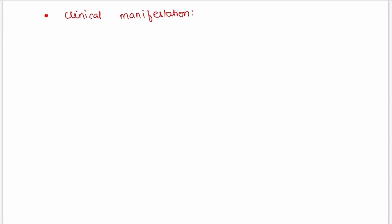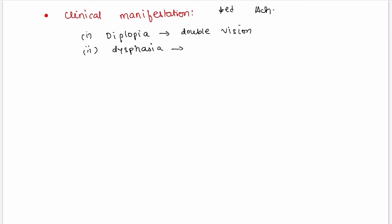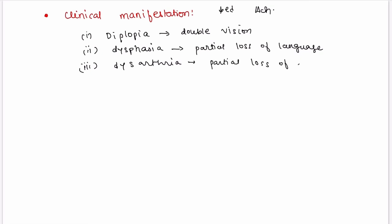Now let's talk about the clinical manifestations of botulism. These manifestations are due to decreased acetylcholine in cranial nerve and parasympathetic nerve terminals. The first is diplopia, which means double vision. The second is dysphasia, which means partial loss of language. The third is dysarthria, which means partial loss of speech. Dysphasia means loss of language and dysarthria means loss of speech.